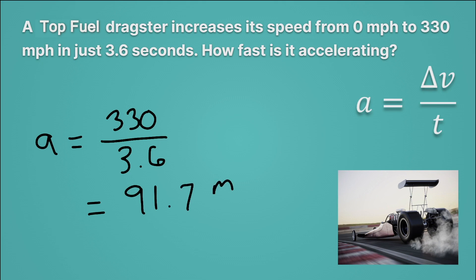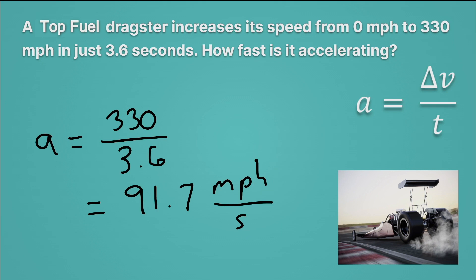That's miles per hour — the unit up top — and second is the unit on the bottom. Now that's a pretty weird unit. Normally, we always require that the hour unit for time and the second unit for time be the same. But it's actually kind of nice to look at it in the split units for just a minute, because this is what acceleration is saying: every single second, this car gets 91 miles per hour faster. So at zero seconds it's going zero miles per hour; at one second, 91 miles per hour; at two seconds, about 180 miles per hour. Every single second, it gets 91.7 miles per hour faster.